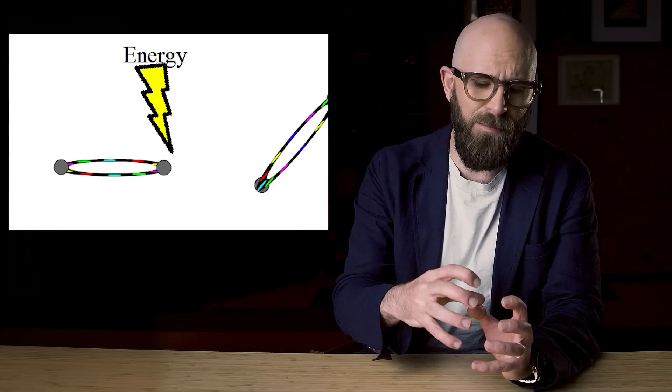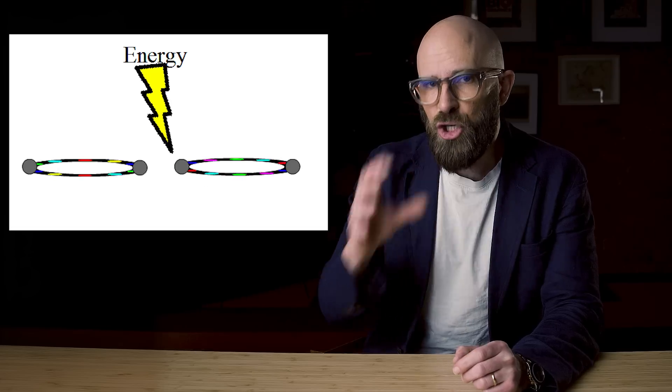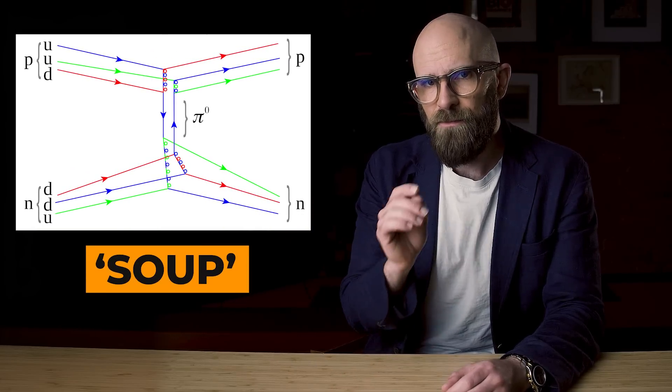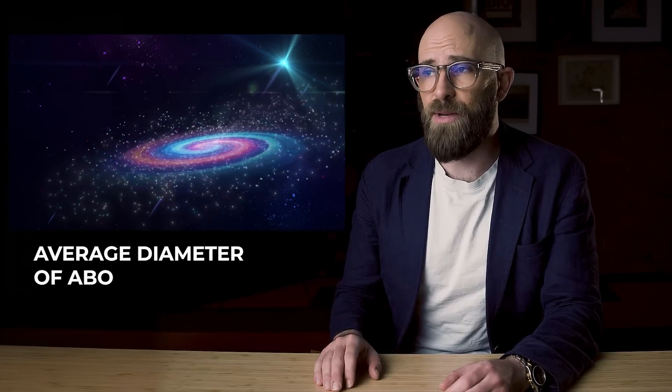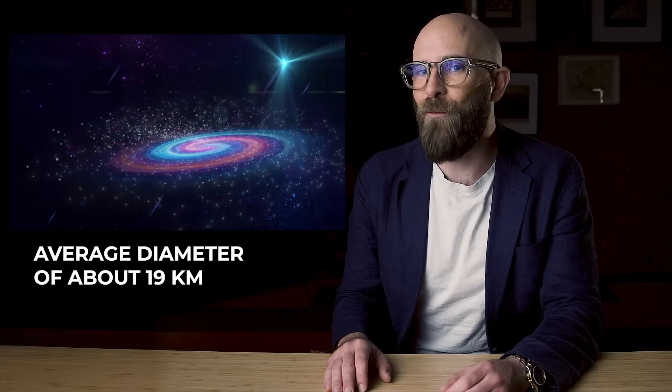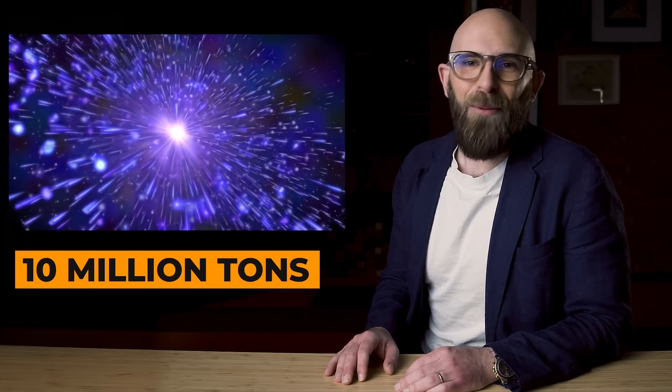A neutron star forms when stars with higher mass than our sun go out with a bang — a supernova explosion. The remaining core has such high density and strong gravity that it collapses onto itself, with its constituent atoms compressed together under unbelievable pressure. The pressure crushes together protons and electrons, resulting in a soup of only neutrons. These stars average only about 19 kilometers in diameter — about five times the Hollywood Walk of Fame — yet they are incredibly dense, with mass up to twice that of our sun.